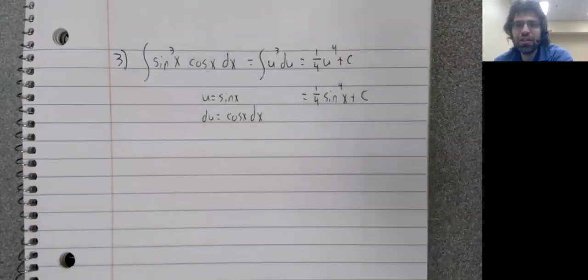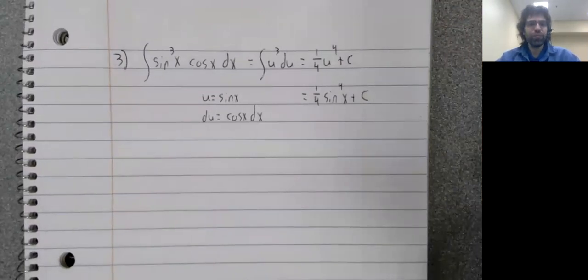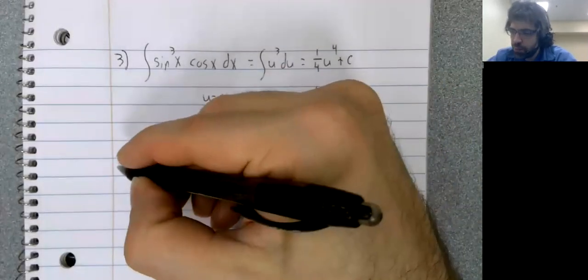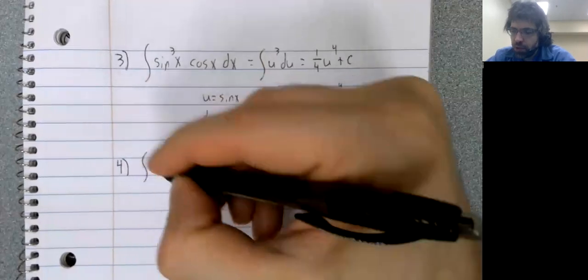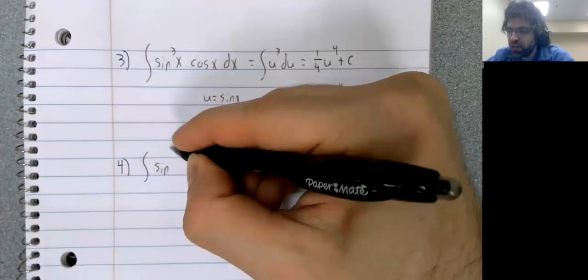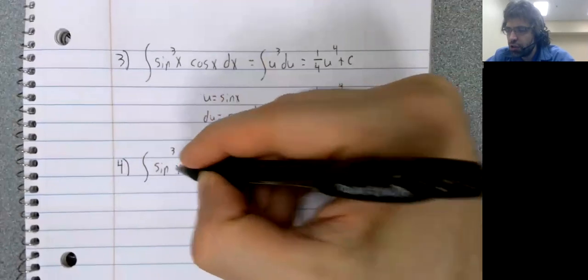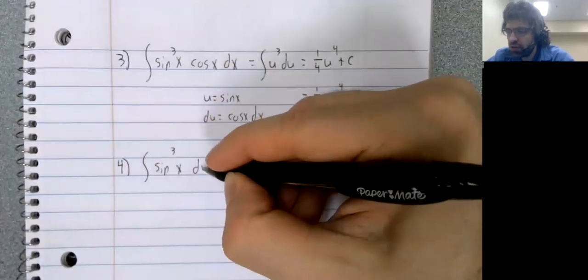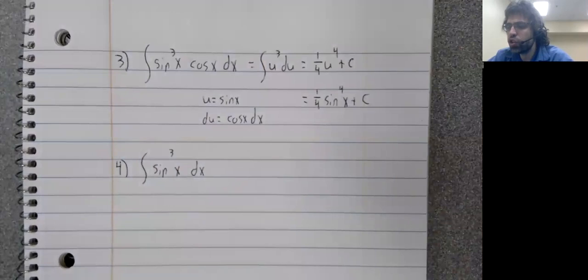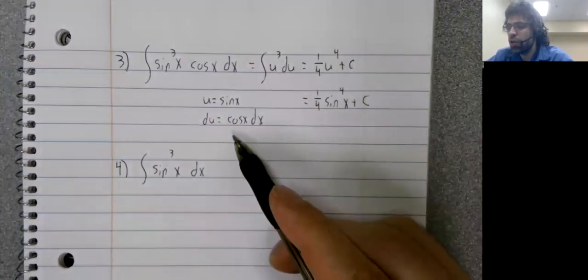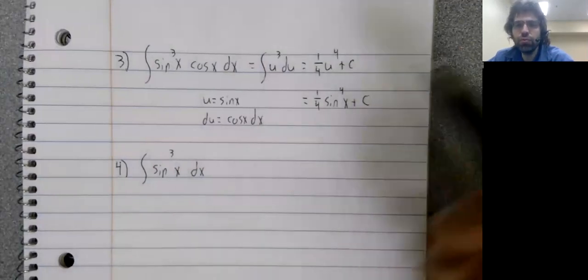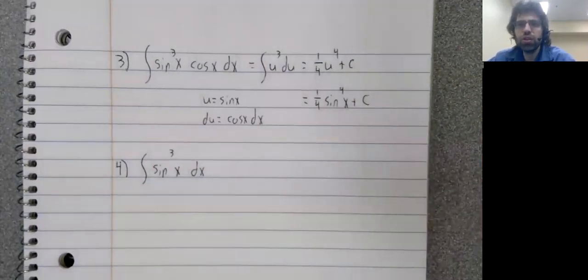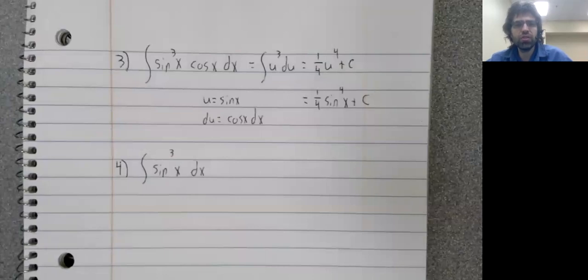Now problem four, by contrast, requires the technique of that section. There is no cosine to be part of a DU. So this U substitution doesn't work.